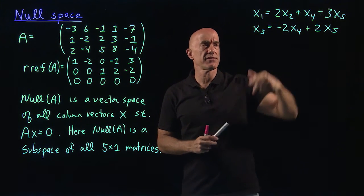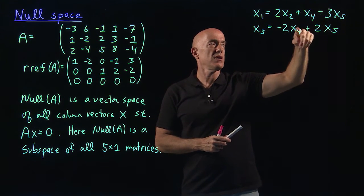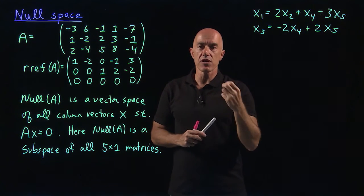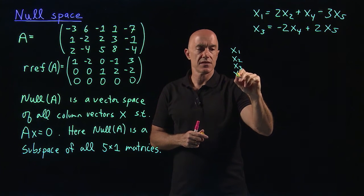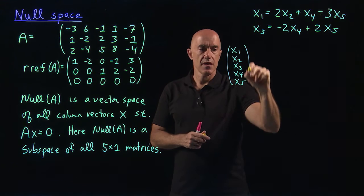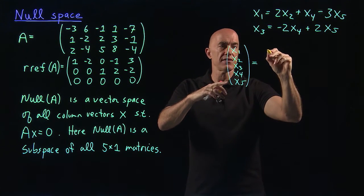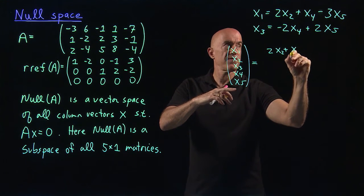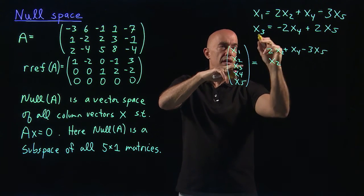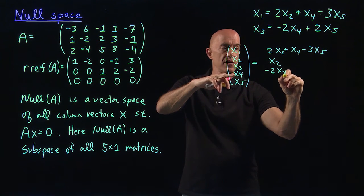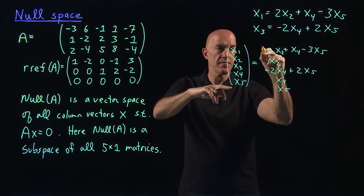This tells us what x1 and x3 have to be in relationship to x2, x4, and x5. So if we're looking for x in the null space, then x1 must equal 2x2 plus x4 minus 3x5; x2 can be anything; x3 must equal minus 2x4 plus 2x5; x4 can be anything; and x5 can be anything.